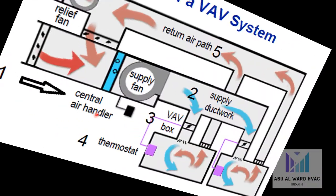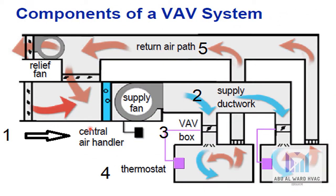A simple VAV system includes the following: we have a central air handler with a variable volume supply fan, a cooling coil, possibly a heating coil, controls, filters, a mixing box, and a return or relief fan. We have VAV terminal units or boxes with a thermostat and supply diffuser for each independently controlled space, a thermostat and unit controller for each terminal unit, and finally a return plenum or duct.